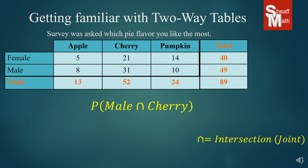Here's another intersection problem. What is the probability of the person you're asking being a male and liking cherry pie? We find the intersection of male and cherry pie, and that's 31. Out of our total of 89, we get 31 over 89. These particular fractions cannot be simplified, but if you have one that can be simplified to lower terms, you're going to want to do that.